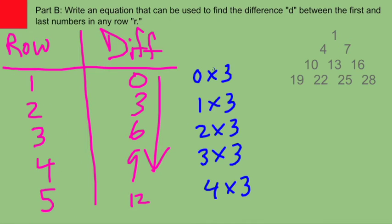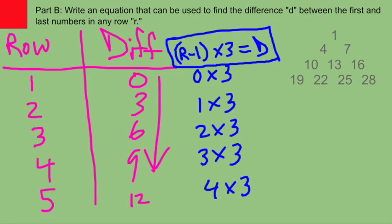Any row minus 1 times 3 equals the difference. That's what's going on here. Row number 2 minus 1 is 1 times 3. That's how we get from here to here. Okay? So that's an equation that matches our situation. That's kind of what we're looking for when we're writing an equation.